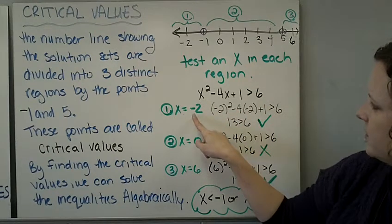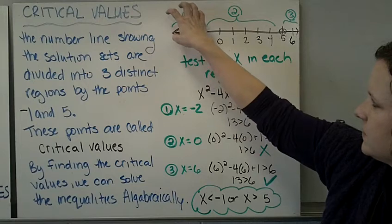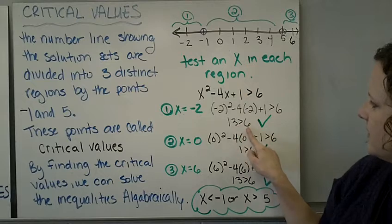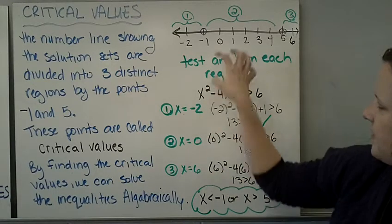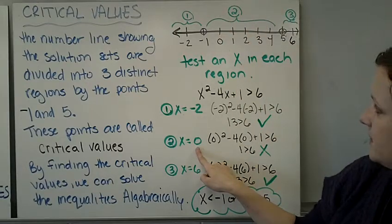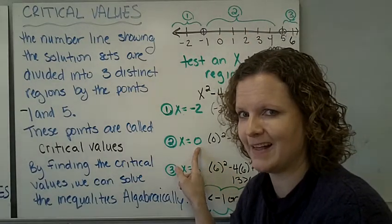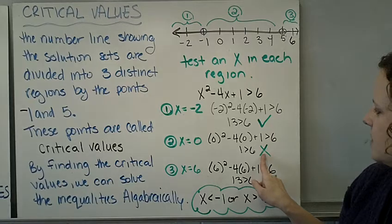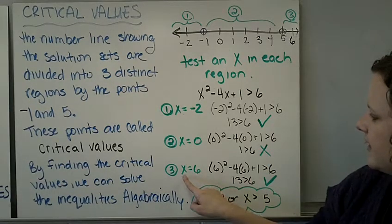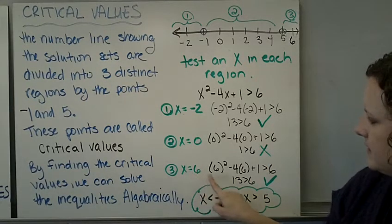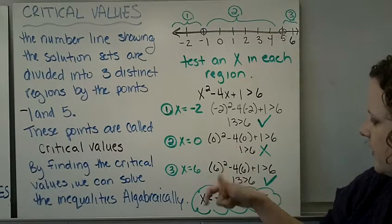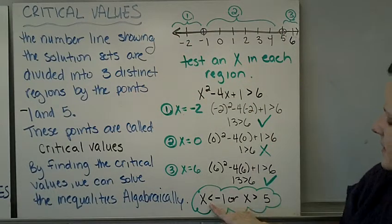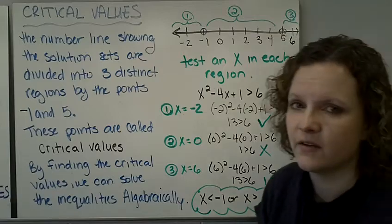There's our equation. I'm going to grab x equals negative 2, which is in region 1. Plug negative 2 in for x. Compare. Is 13 greater than 6? Yes. Grab an x from region 2. I picked 0, because 0 is always an easy one to calculate. Plug 0 in for x. Do the inequality. Is that true? No. And then x equals 6. Plug in 6. Check your inequality. We're good. So our inequality is from there and there, which is why we write x less than negative 1, x greater than 5. Those are our answers.